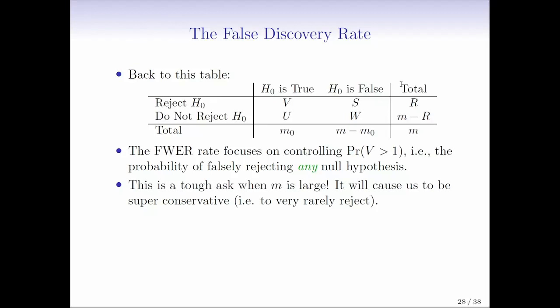In the case of a criminal defendant, that might be okay because maybe the cost of falsely convicting even one person is just a cost we're not willing to bear. But there are other settings where we might be able to occasionally make some type 1 errors in exchange for being able to reject a larger number of null hypotheses.